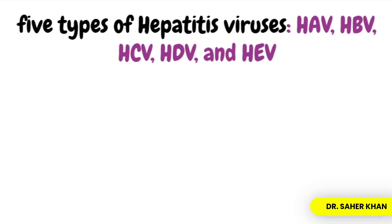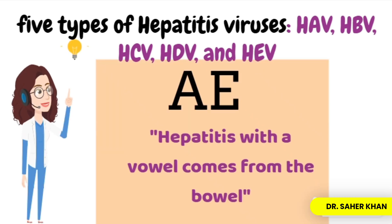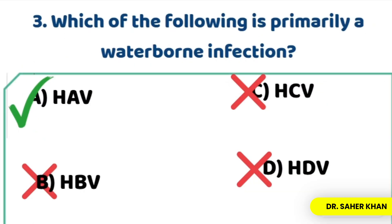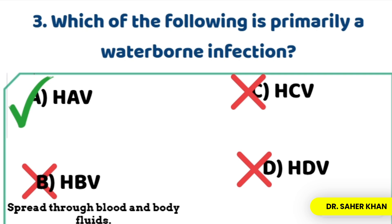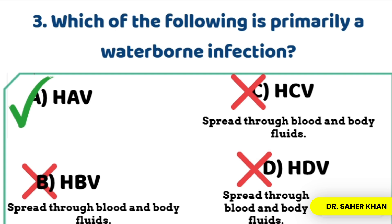An easy way to remember this is 'AE' — A and E are vowels. So HAV is the correct answer. HAV and HEV are spread through the feco-oral route via contaminated water and food. The rest — B, C, and D — are bloodborne, transmitted through blood, sexual contact, or from mother to child.